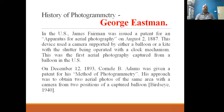On December 12th, 1893, Cornelius B. Adams was given a patent for his method of photogrammetry. His approach was to obtain two aerial photos of the same area with the camera from two positions of a captured balloon — observing the same area from two positions — which would be used for 3D measurement.